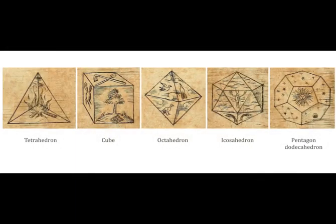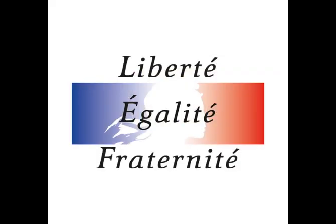The tetrahedron, which consists of triangles, so the figure on the left, represents fire. You can think of a flame going upwards. The tetrahedron and the number three have the expression of upward striving. Ideals are often formed as trinities.